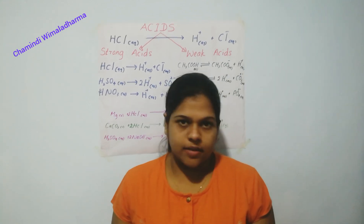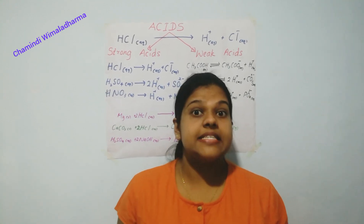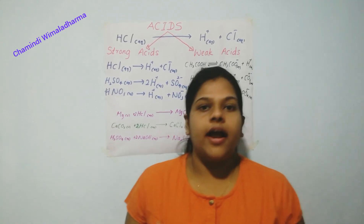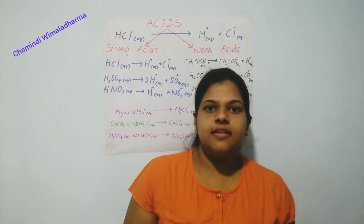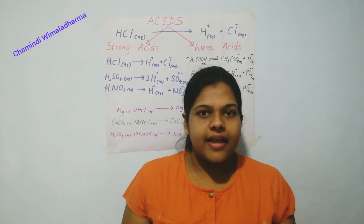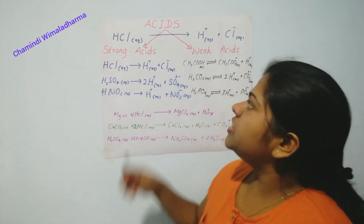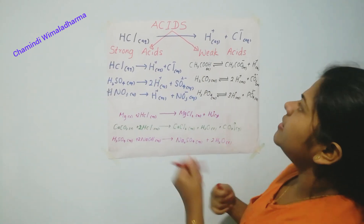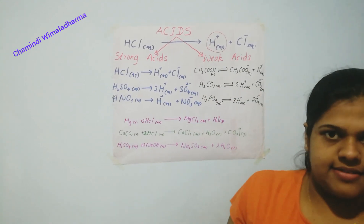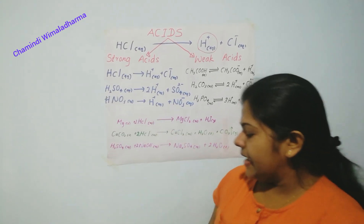We know that there are different types of acids. Acids means the compound which can release H+ ions in an aqueous medium. There are several acids such as Hydrochloric Acid, Sulphuric Acid, Nitric Acid, Acetic Acid, Citric Acid, and Lime, Vinegar, and Pineapple — they also contain acids. The main feature of an acid is they can give out H+ ions in an aqueous medium. That's why we have put here (aq). HCl is dissociated into H+ and Cl- ions.